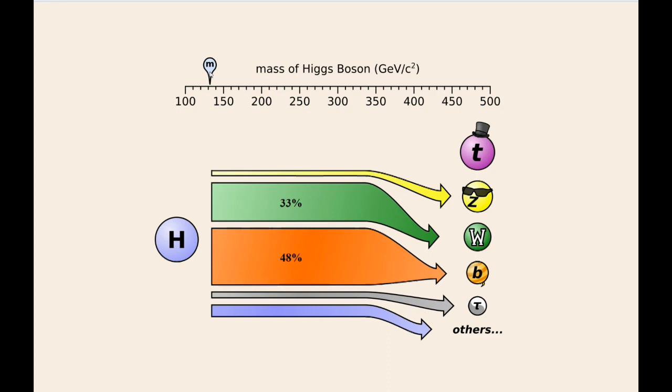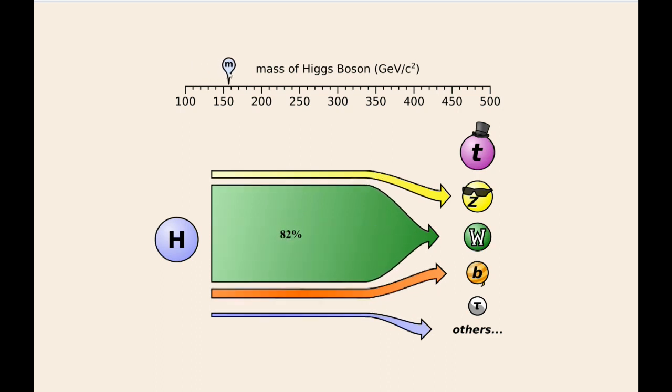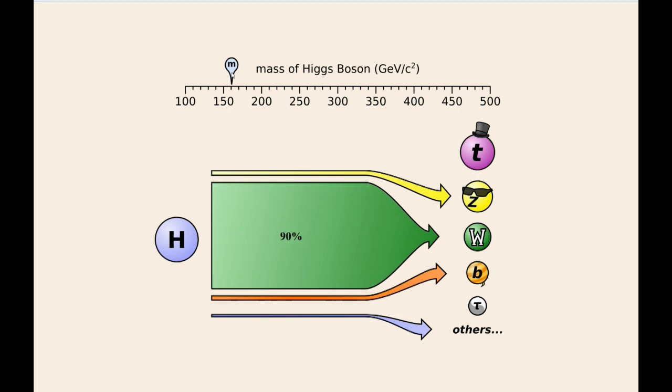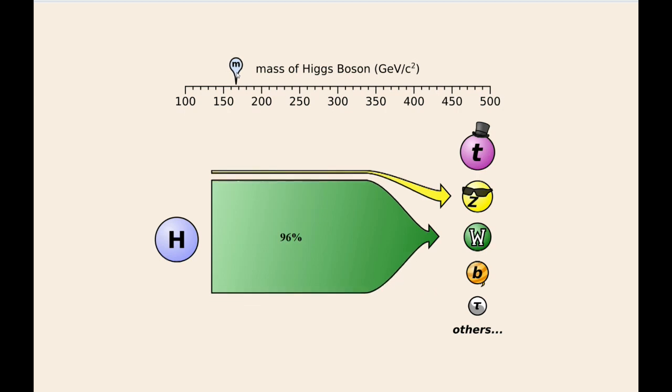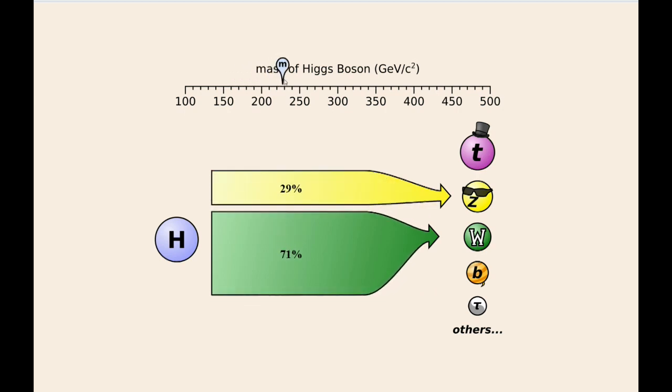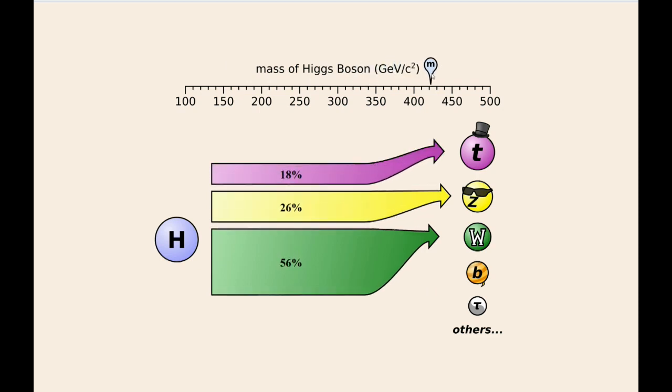As I raise the mass to about 160, we see that the Higgs boson will decay nearly entirely into W bosons. Above that mass, the ways in which the Higgs boson decays continues to change and eventually even includes a possible decay into top quarks.